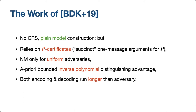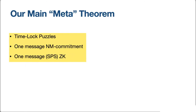What we do is provide a meta-theorem implying a new construction of a non-malleable code. Here are the three building blocks: a time-lock puzzle, a one-message non-malleable commitment, and a one-message zero-knowledge scheme. By one-message I mean just a single-shot message with no interaction. Note this is not a generic construction — we use specific constructions and specific properties of these primitives.